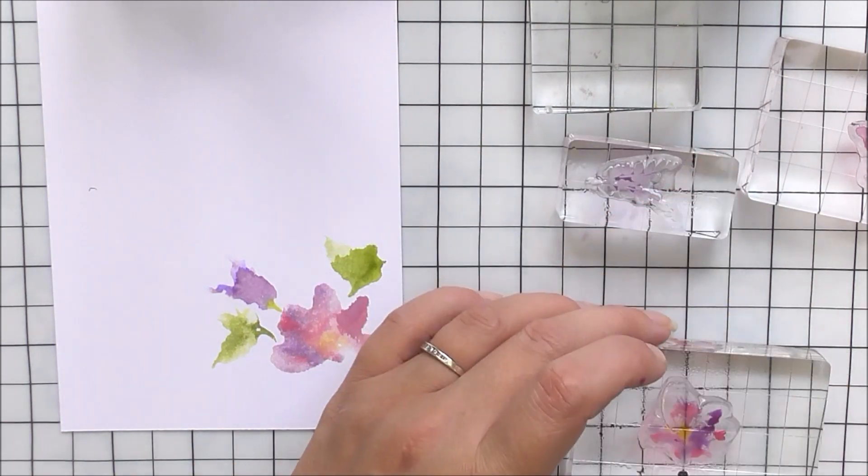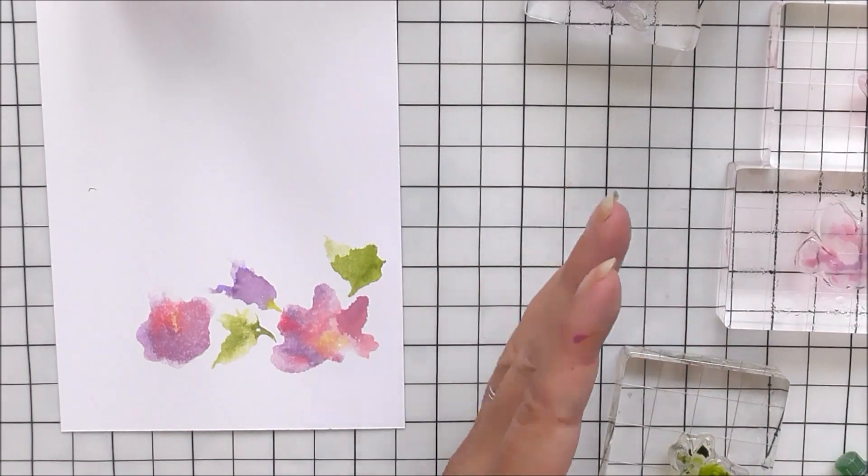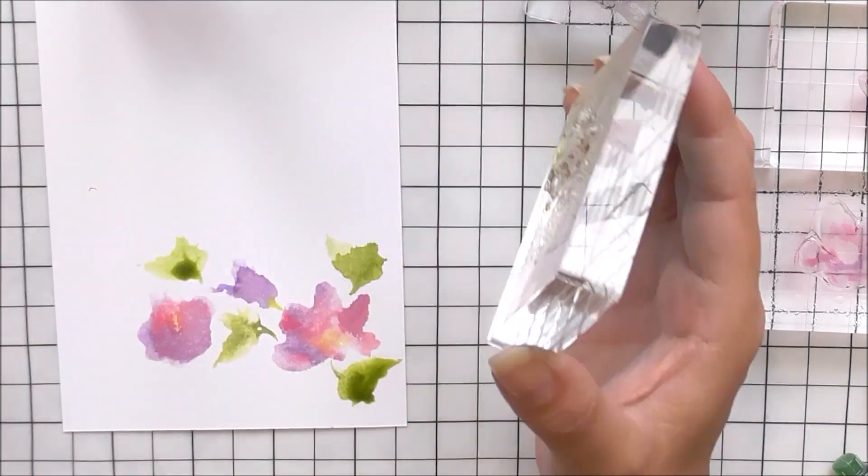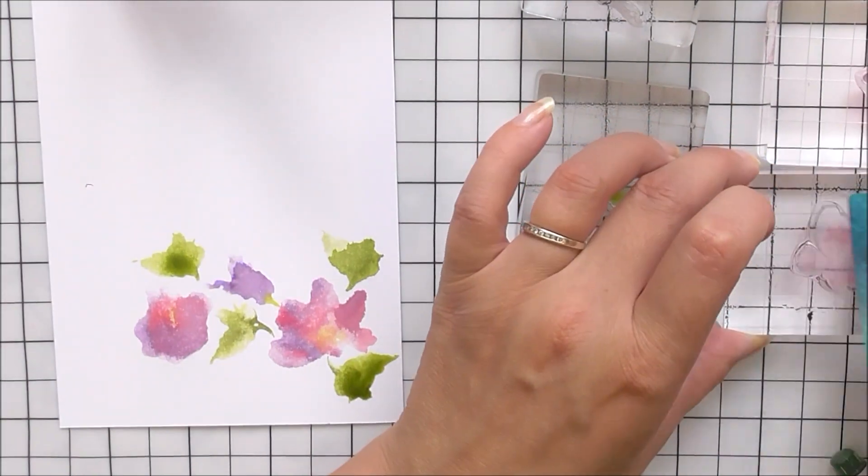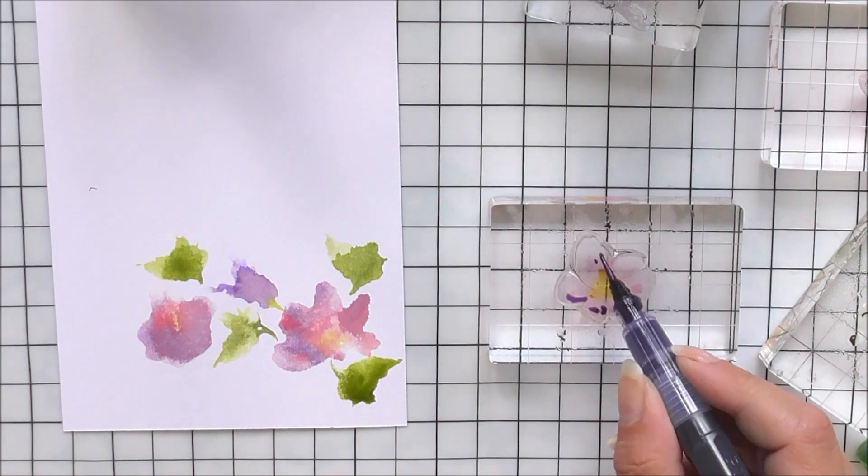I'm just going to keep going with the same technique for the flowers, the leaves, and for that little blossom image. As you can see, I do keep cleaning my stamps and making them nice and dry before I add the color.